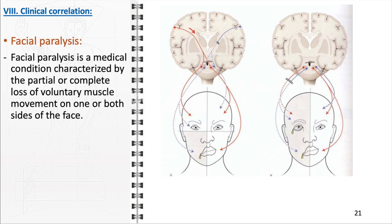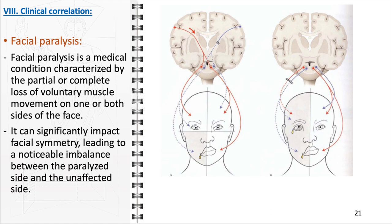Before concluding, we will discuss an important clinical correlation: facial paralysis. This significant clinical condition involves either partial or complete loss of voluntary muscle movement on one or both sides of the face. The loss of muscle function can stem from various causes, including Bell's palsy, stroke, trauma, or infections like Lyme disease. Physically, facial paralysis disrupts facial symmetry, and in severe cases, this asymmetry can lead to difficulties in basic functions such as eating, drinking, and speaking, as the muscles responsible for these actions are compromised.